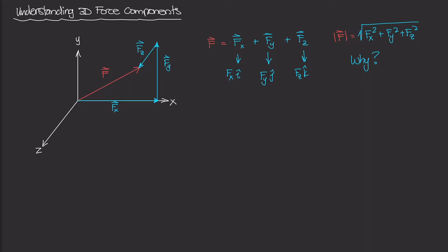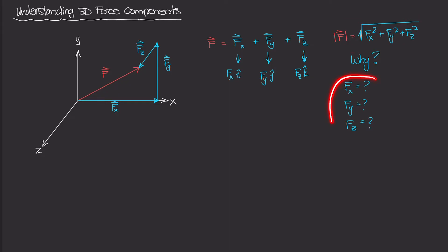In this video, I want to answer two questions: where does this formula come from, and how can we figure out the values of F of X, F of Y, and F of Z? If we needed to calculate the values for those three components, what are they and how do we find them?